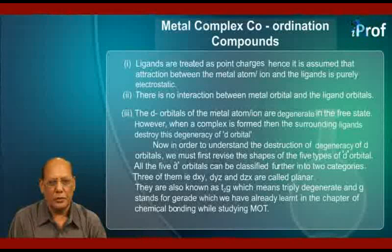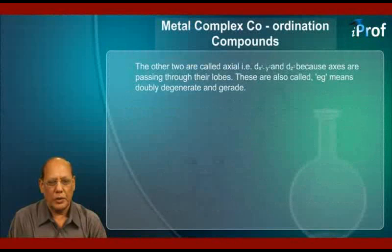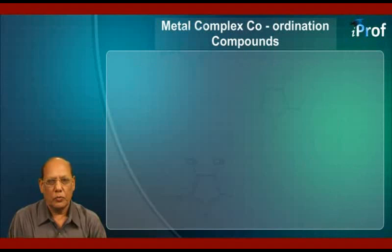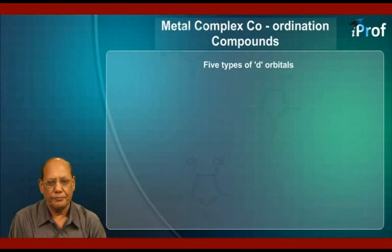We have already learned about gerade in the chapter of chemical bonding while studying molecular orbital theory. The other two are called axial — that is, dx²−y² and dz² — because axes are passing through their lobes. These are also called eg, meaning doubly degenerate and gerade. The shapes of the five types of d-orbitals with their two classes are given in the following figures.